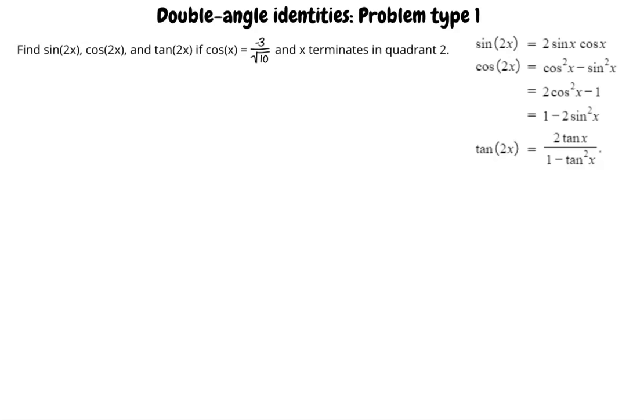The first thing we want to do is draw a reference triangle in quadrant 2. Is quadrant 2 the top left region on the coordinate plane? Yes, you are correct. We can approximate the triangle like this.